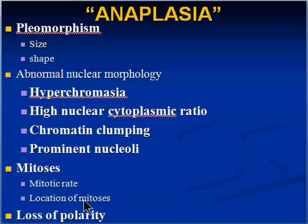If you see a mitosis in which the chromosomes are going off in three or four different directions rather than two — which is what basic biology tells you — we call that a multipolar or tripolar mitosis. Any mitosis which goes off in more than two directions is almost certainly a malignant cell; I really can't think of any benign conditions.